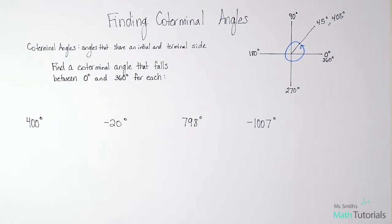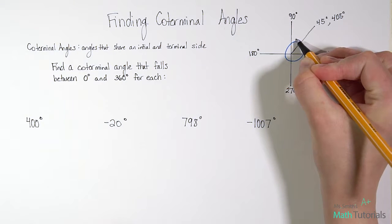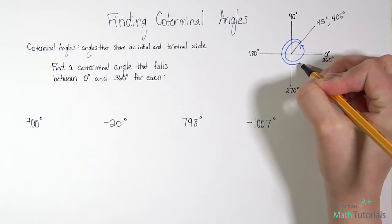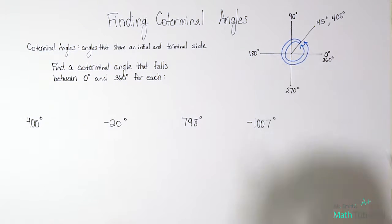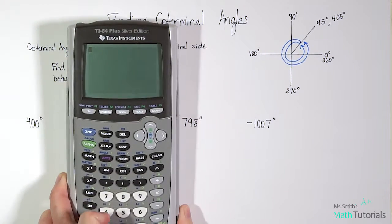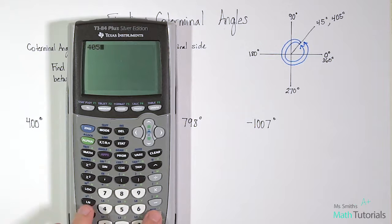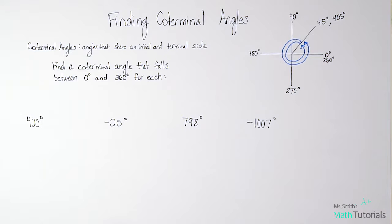And then you could keep going. We could take that and we could circle again. So we're at 405 and now we're going to circle an additional 360 degrees. So we would take that now starting place, the 405, and we would add 360 again. And that would give us 765 degrees.